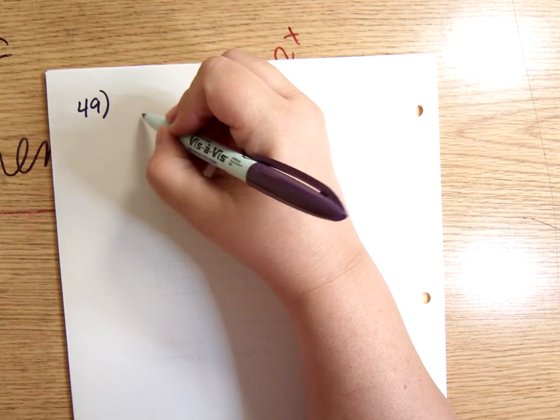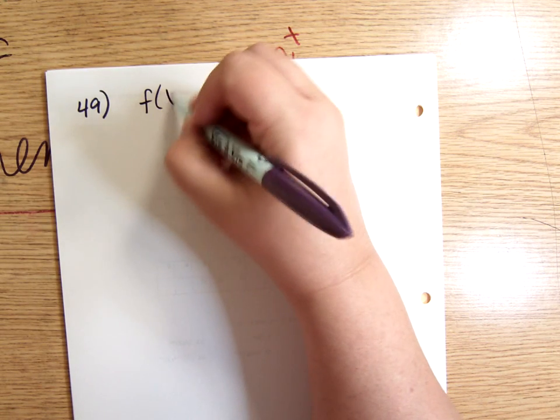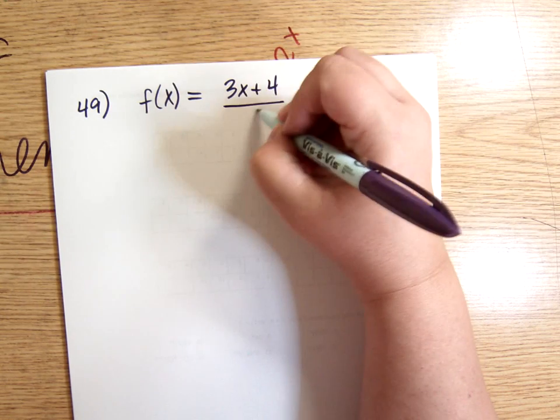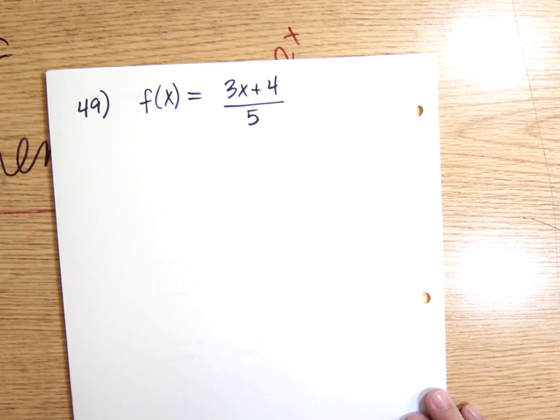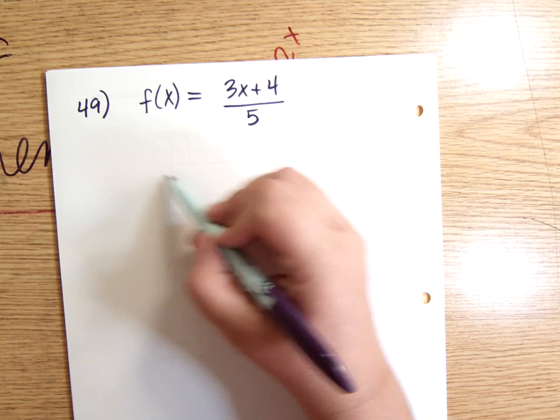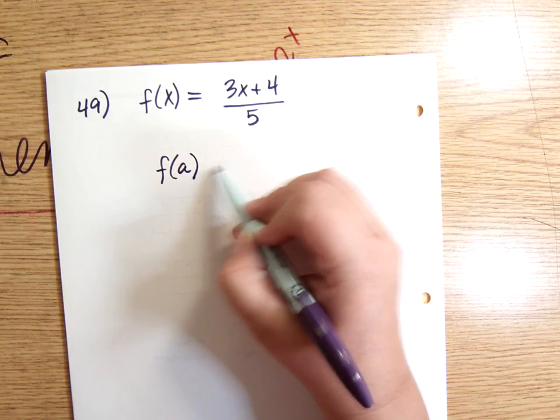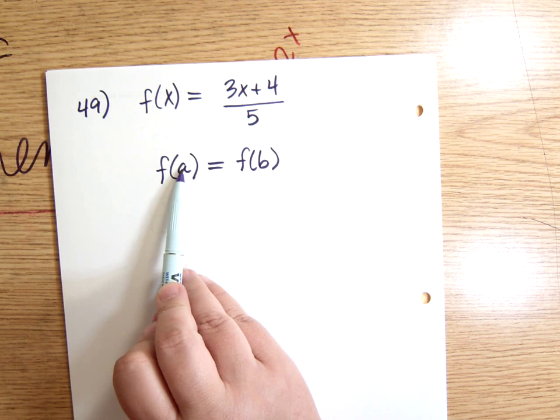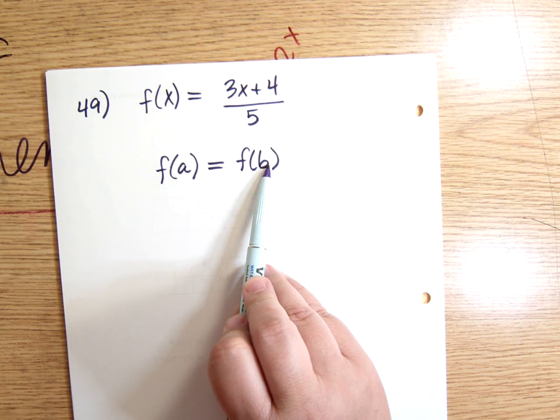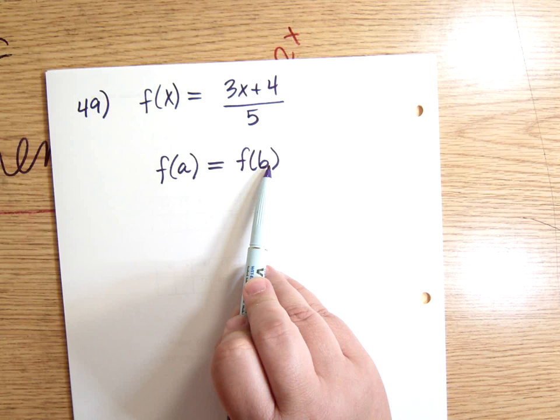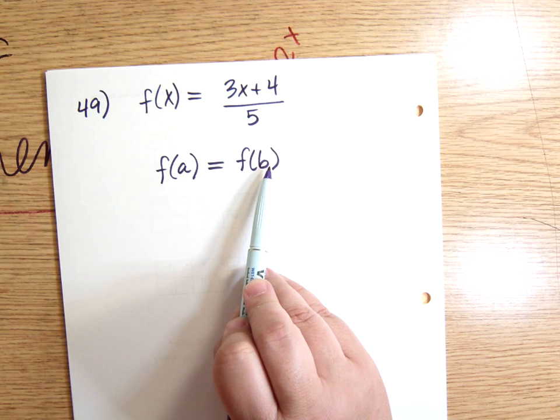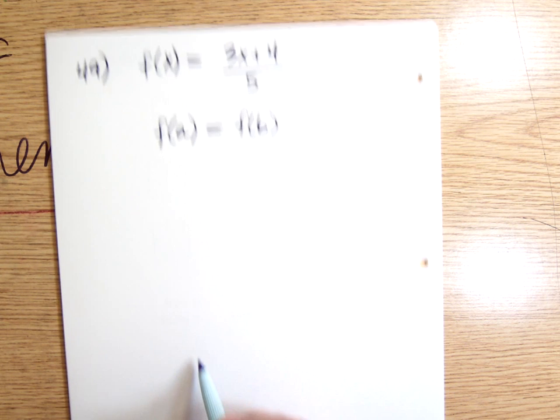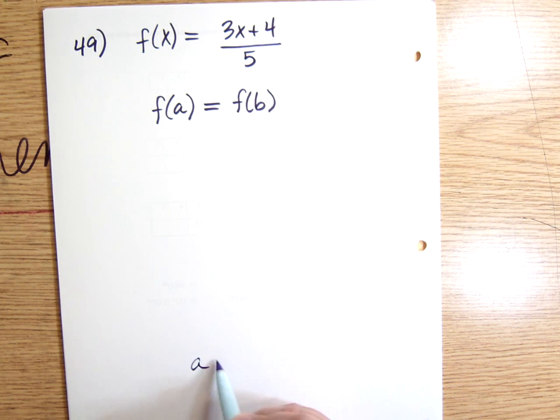Let's look first at 49. Number 49: f(x) = (3x+4)/5. The definition algebraically of one-to-one is that if f(a) is equal to f(b), which is basically just saying if I get the same y value by plugging in a that I get by plugging in b, then that means a and b have to be the same. So if we start with this, we should end up by concluding that a is equal to b.